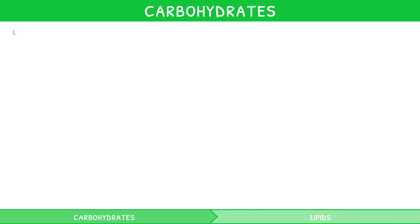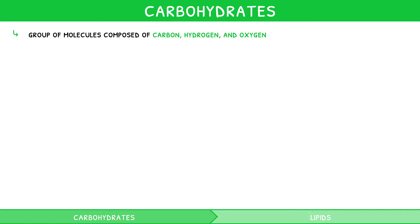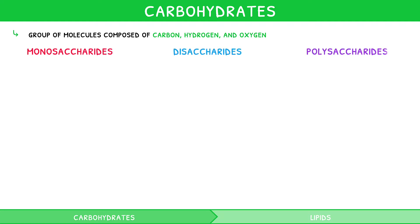Carbohydrates are a group of molecules composed of carbon, hydrogen and oxygen. Carbohydrates are present in three levels of structure, known as monosaccharides, disaccharides and polysaccharides.